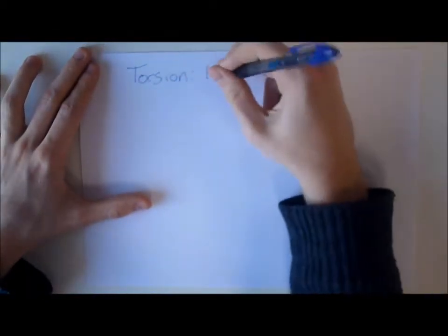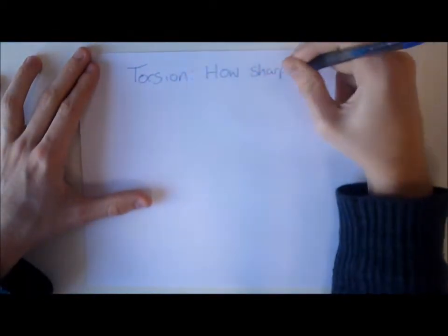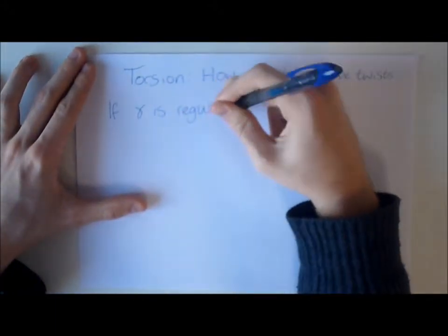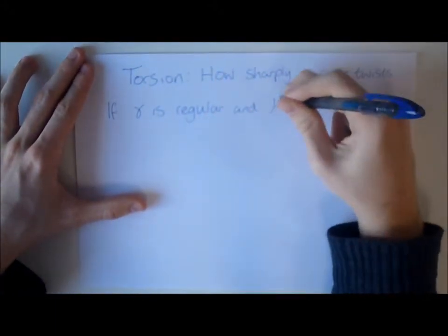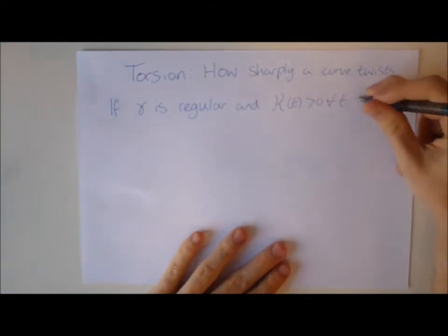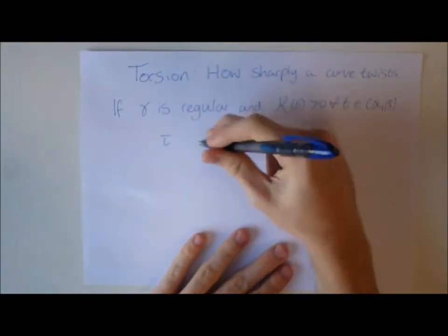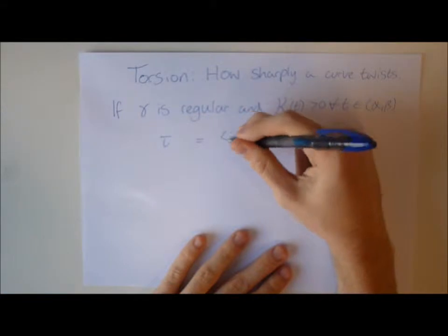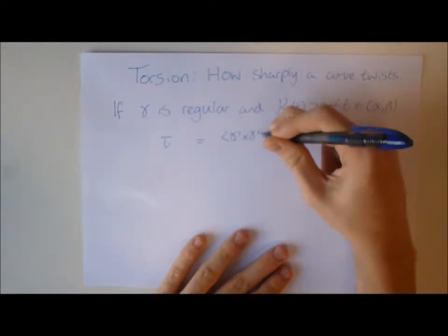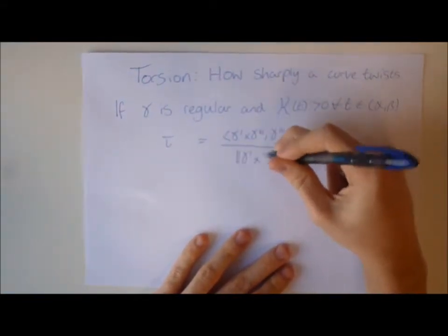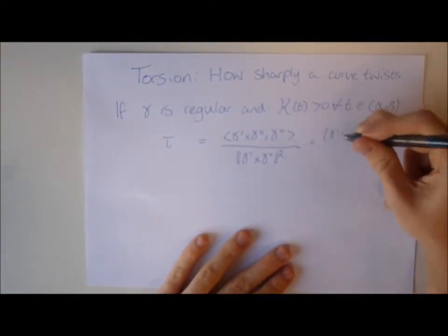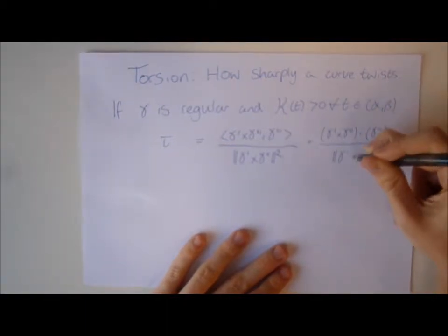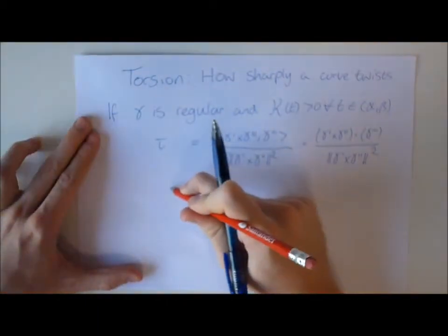If gamma is regular and the curvature is greater than 0 for all t in our given interval, then we can calculate torsion. It is given by the scalar triple product of (gamma prime × gamma double prime) and gamma triple prime, all divided by the length of (gamma prime × gamma double prime) squared. A slide can have curvature, but it takes torsion to give it fun.